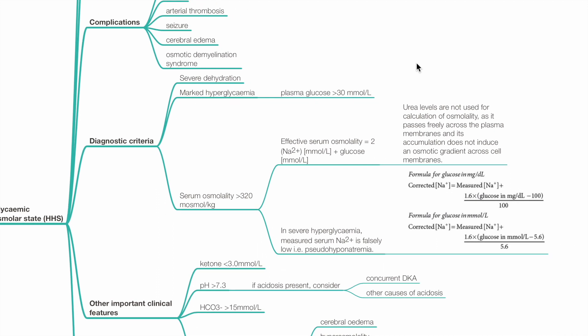Diagnostic criteria: severe dehydration, marked hyperglycemia with plasma glucose more than 30 mmol per liter, and serum osmolality more than 320 mOsmol per kg. Effective serum osmolality equals 2 times sodium concentration plus glucose. Urea levels are not used for calculation as it passes freely across the plasma membranes and its accumulation does not induce an osmotic gradient across cell membranes. In severe hyperglycemia, measured serum sodium is falsely low, i.e. pseudo-hyponatremia.